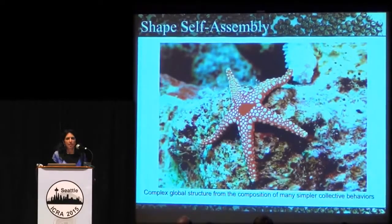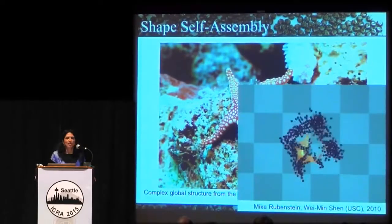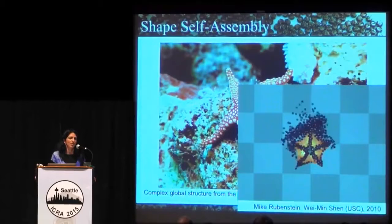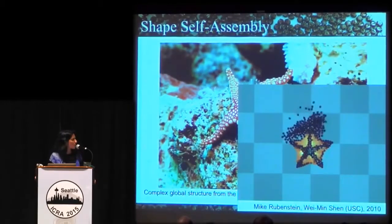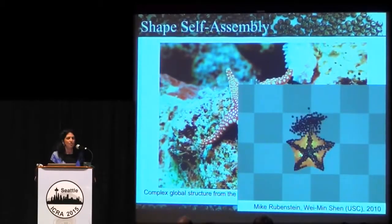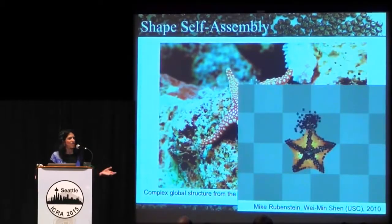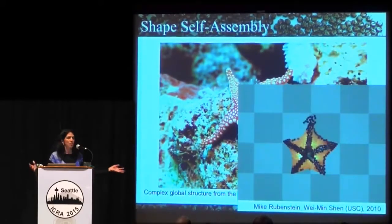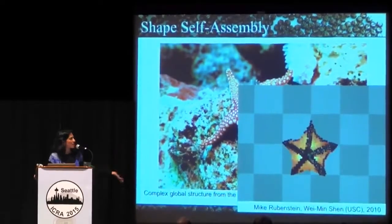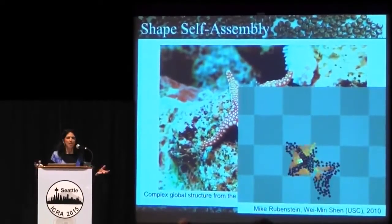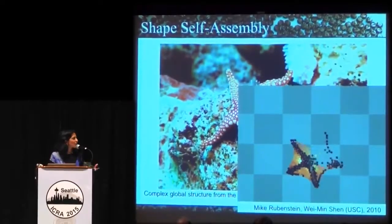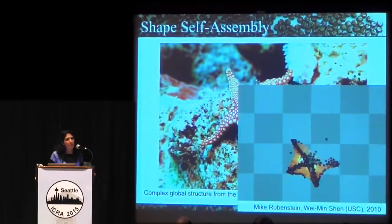If we want to do something as complicated as forming a starfish shape, there has been quite a bit of work on how to self-assemble these shapes. One of my favorite pieces of work is Mike's PhD thesis with Wei Min Shen, where they looked at how you could self-assemble something like a starfish. It uses some of the same collective behaviors, but it's more sophisticated than what we've achieved. The starfish forms the right shape based on the number of individuals and can even repair itself — the algorithms are really beautiful, but still far from what we can implement.